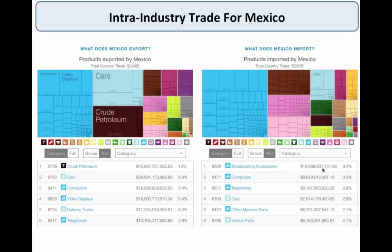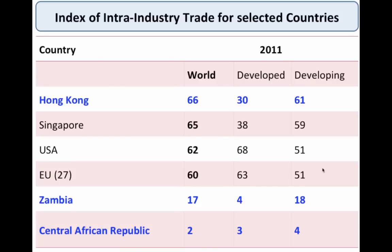Here's some data on intra-industry trade — the higher the figure, the greater the level of intra-industry trade. Hong Kong and Singapore are right up there with the United States, having the highest index of intra-industry trade. The European Union, full of high-income developed countries, is also pretty high — an index above 60. But contrast those four — Hong Kong, Singapore, USA, and Europe — starkly with two countries: Zambia with an index of 17 and the Central African Republic with an intra-industry trade ratio of just two — the lowest in the world.